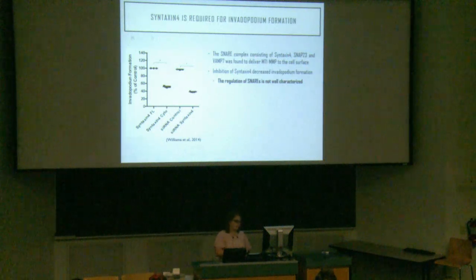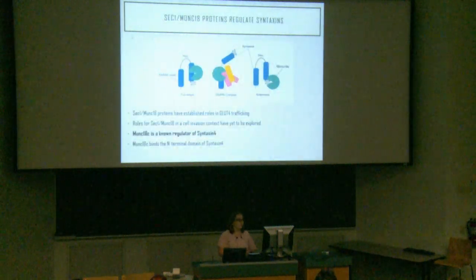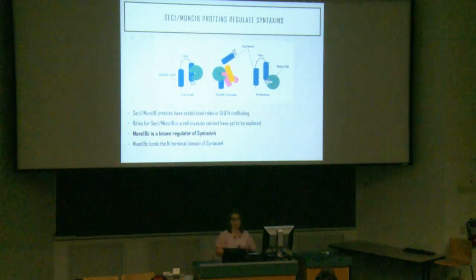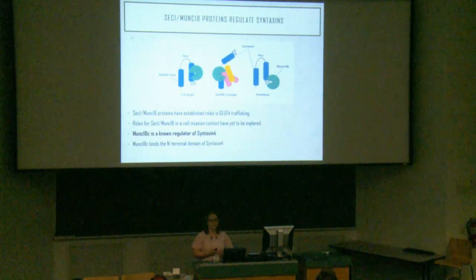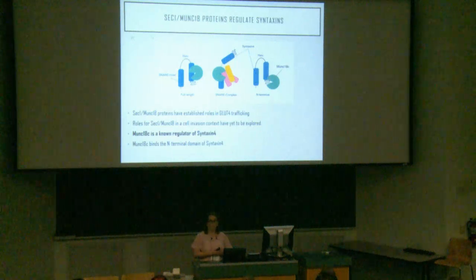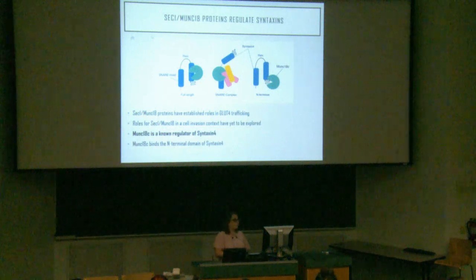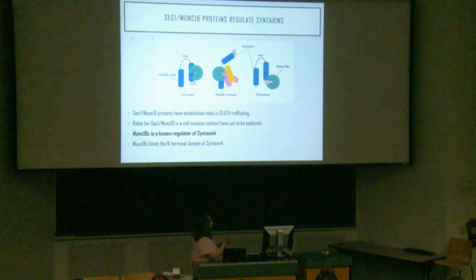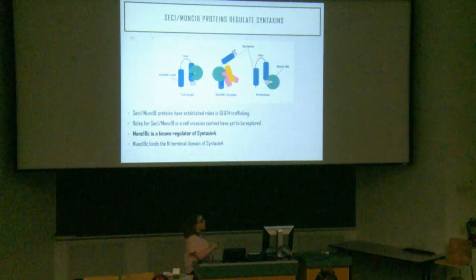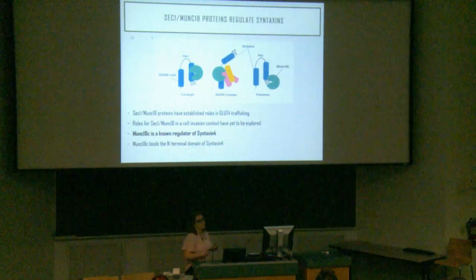The regulation of SNAREs is not well characterized. This brings us to work by another graduate student, Dave, who looked for a regulator of SNAREs and found a candidate called MUNC18C. MUNC18C is a SEC-1/MUNC18 protein with established roles in GLUT4 trafficking; however, its roles in a cell invasion context are not well characterized. MUNC18C is a known regulator of Syntaxin-4, and today I'll focus on MUNC18C binding to the N-terminus of Syntaxin-4.